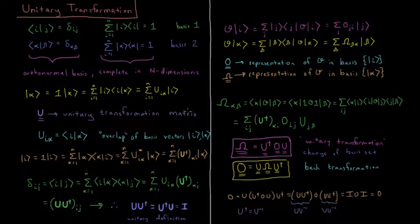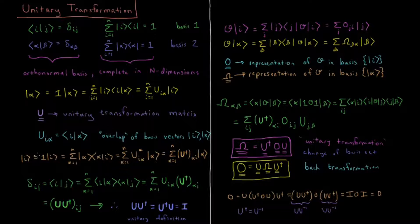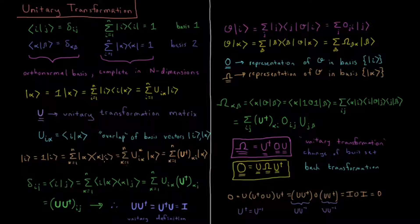This is what we call our transformation matrix — a unitary transformation matrix, though we haven't proved unitarity yet. The individual elements are equal to the overlap of basis vectors I and alpha: bra vector I, ket vector alpha. If we do the reverse operation starting with basis vector I and applying the identity operator, we get a sum from alpha equals 1 to N of ket vector alpha times the overlap of alpha and I, which equals the sum from alpha equals 1 to N of u_iα star — the complex conjugate.